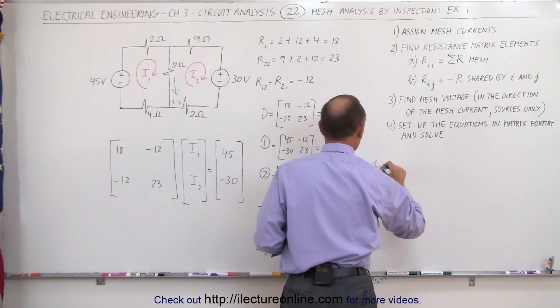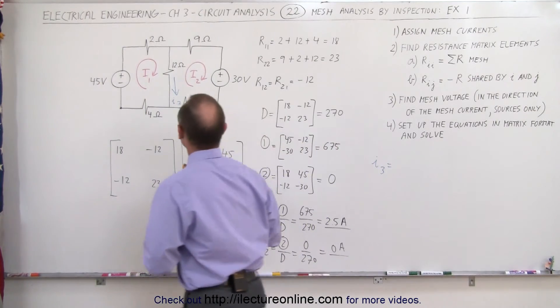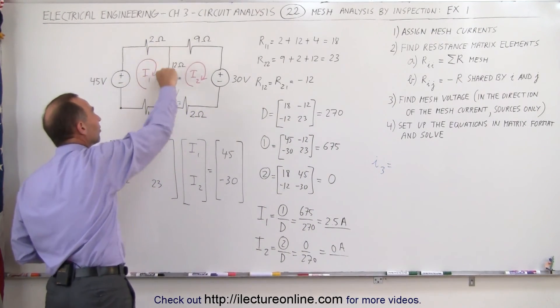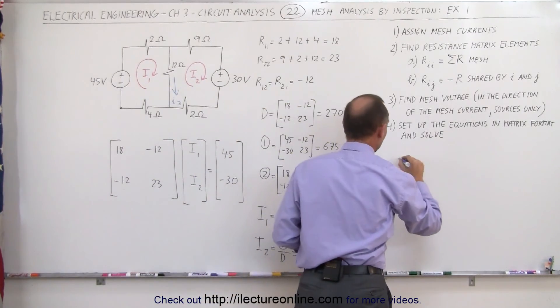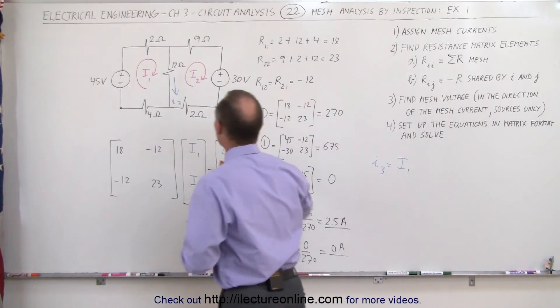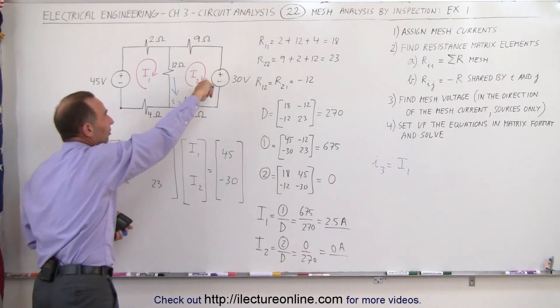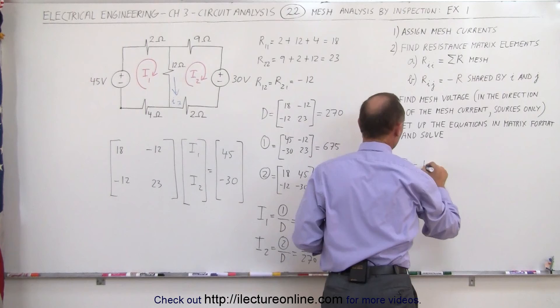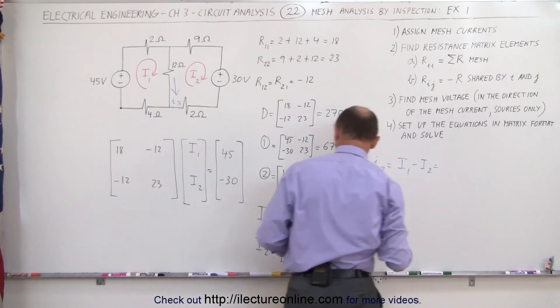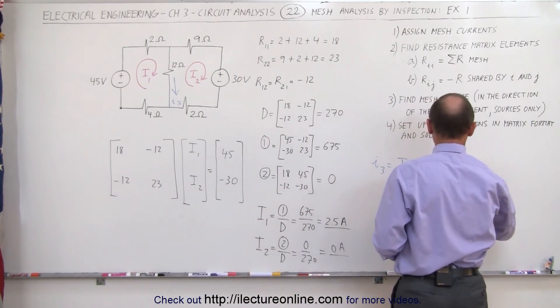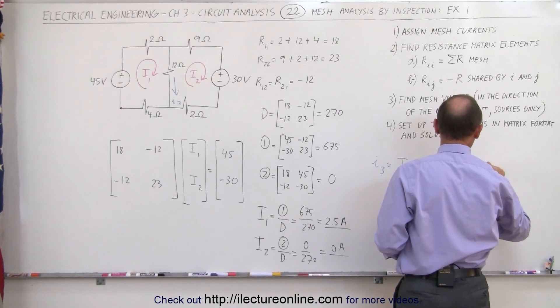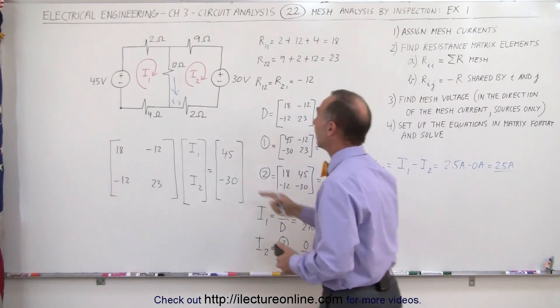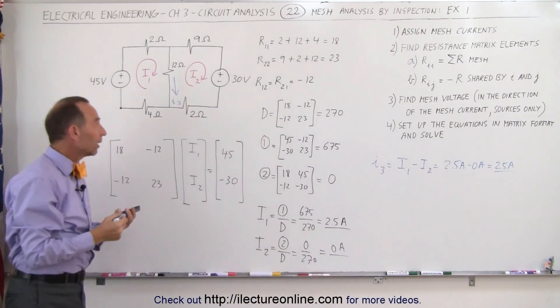I3 is equal to the sum of the two mesh currents to this resistor. Notice that I1 is in the same direction as I3. So you take I1, mesh current I1, but you subtract mesh current I2 because that's in the opposite direction, minus I2. So in this case, since I1 is equal to 2.5 amps, it's 2.5 amps minus 0 amps, which is equal to 2.5 amps for the current through resistance 12 in the direction of the blue arrow.